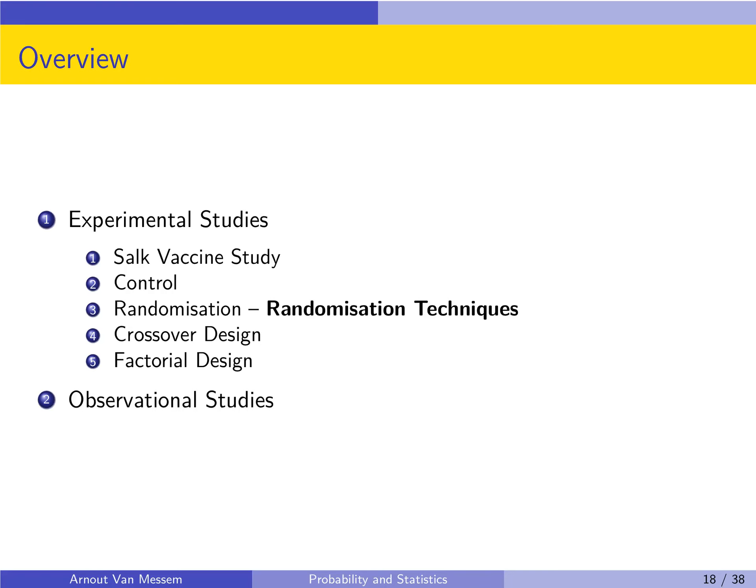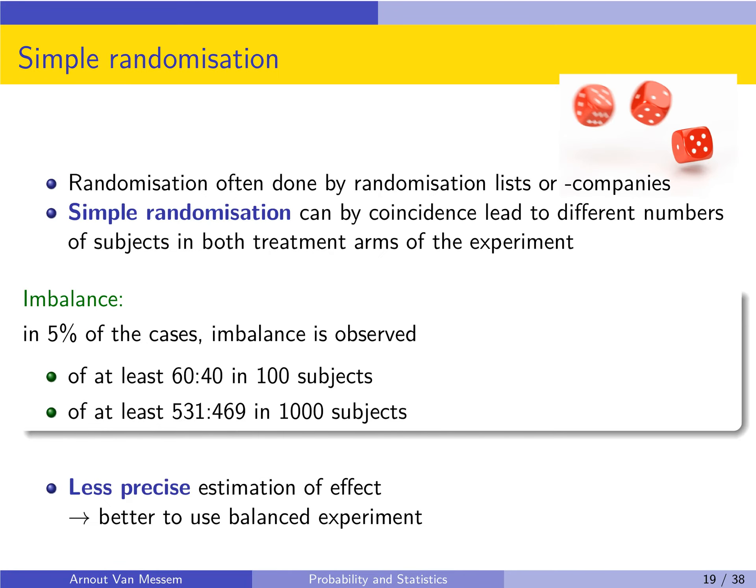What kinds of randomization techniques are there? The first and easiest way is simple randomization. So basically you just assign randomly a subject to one of the groups. Depending on the number of groups you can do it by tossing a coin or by rolling a die. Or what also happens a lot is that it is done by randomization lists or companies. So you have specific companies who will do the randomization for you because that makes it a lot more objective.